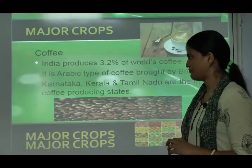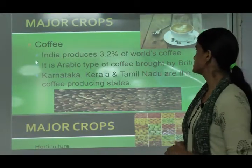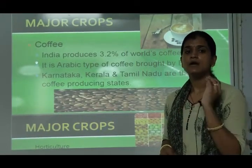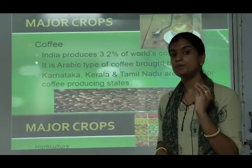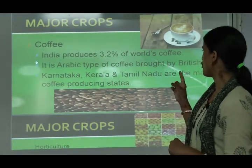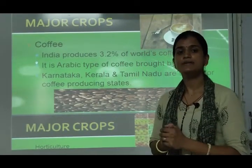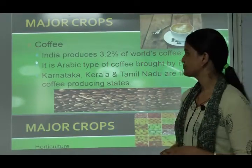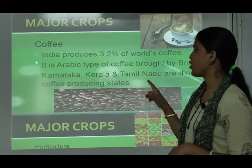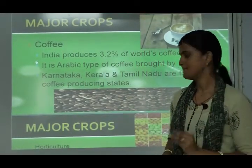India produces 3.2 percent of the world's coffee. It is the Arabica type of coffee brought by the British, and it is grown in India today. Karnataka, Kerala, and Tamil Nadu are the major coffee-producing states.